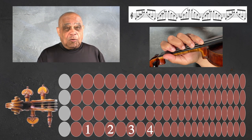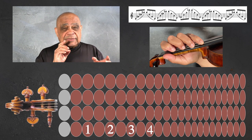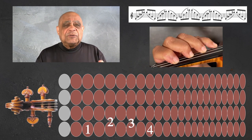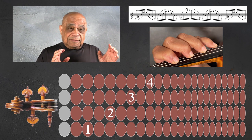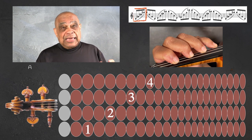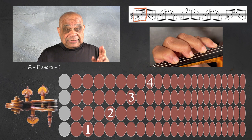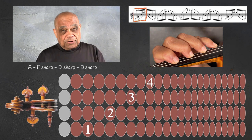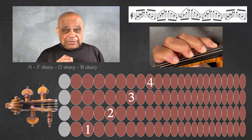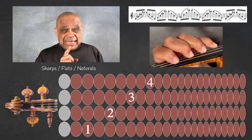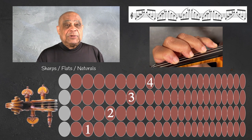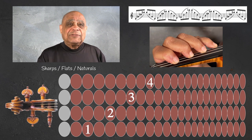All we need to do then is put the second, third, and fourth fingers on the D, A, and E strings, and we have our written A, F sharp, D sharp, B sharp. So when we look at the music and see all the sharps, flats, and naturals, they mask the fact that we are only looking at patterns.